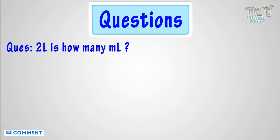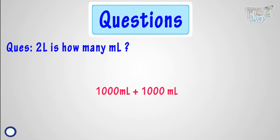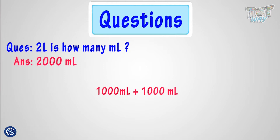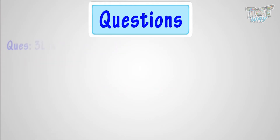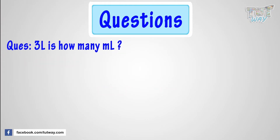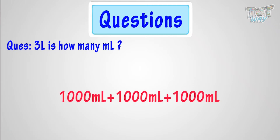1,000 milliliters plus 1,000 milliliters equals 2,000 milliliters. 3 liters is how many milliliters? It is 1,000 milliliters plus 1,000 milliliters plus 1,000 milliliters. That is, 3,000 milliliters.